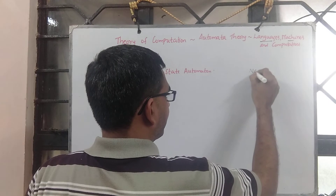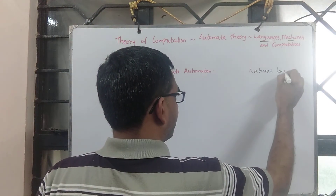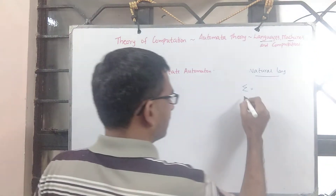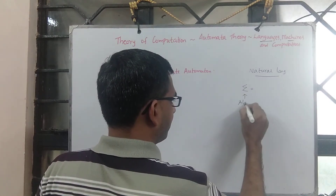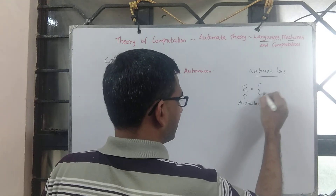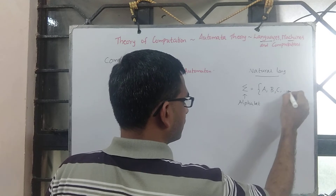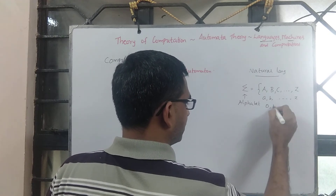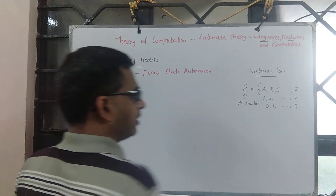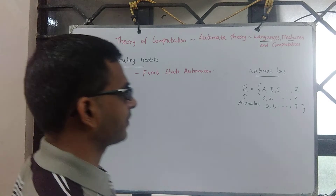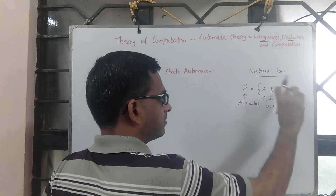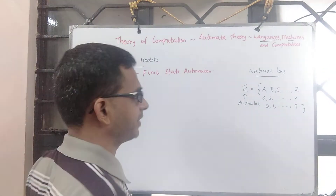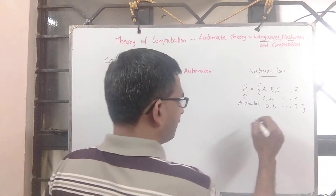If you consider any natural language, in particular say English, you have something called sigma, which we call the alphabet. Alphabet consists of symbols a, b, c, and so on up to z, then small letters, then we have 0, 1, and so on up to 9. You can even separate these and have the numbers as a separate part of the alphabet. So now you try framing words — for example, the word 'alphabet' itself.